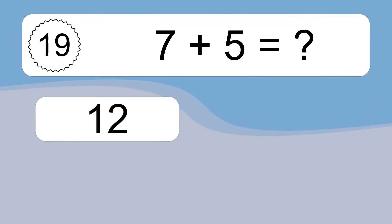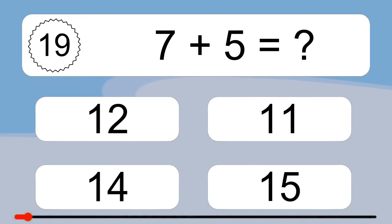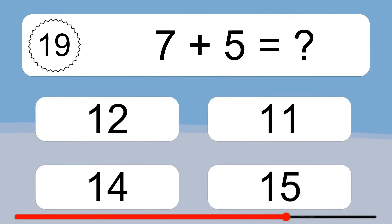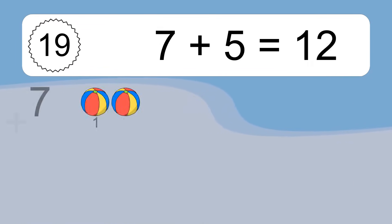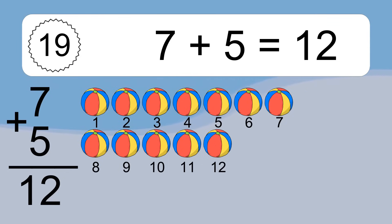7 plus 5 equals what? 7 plus 5 equals 12. Let's count it: 1, 2, 3, 4, 5, 6, 7, 8, 9, 10, 11, 12.